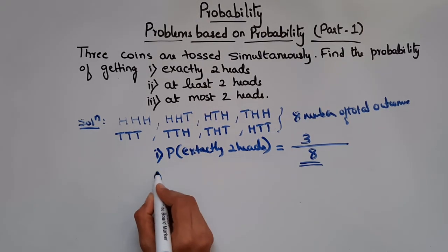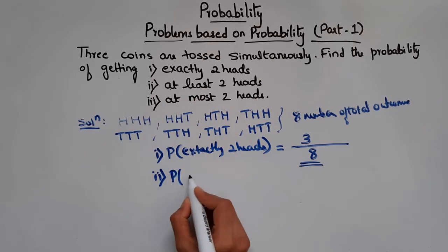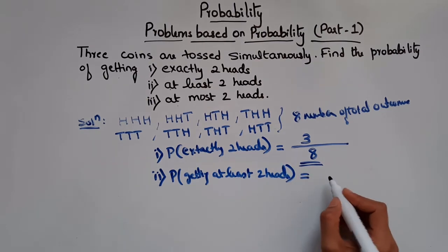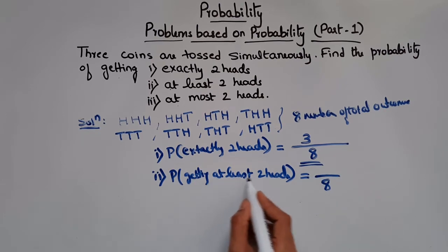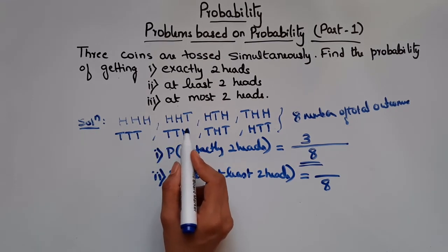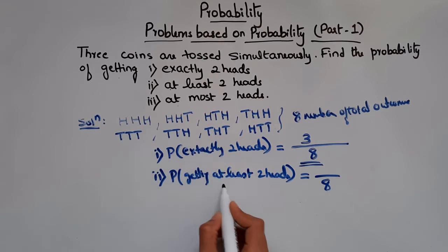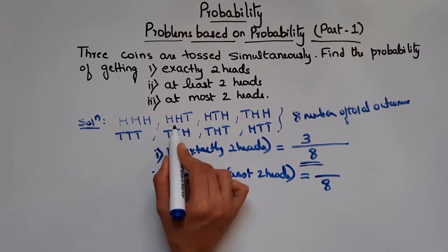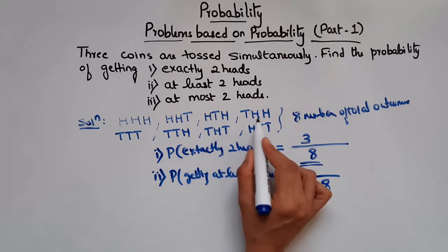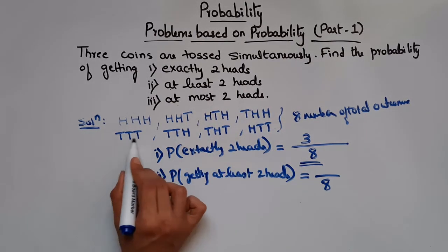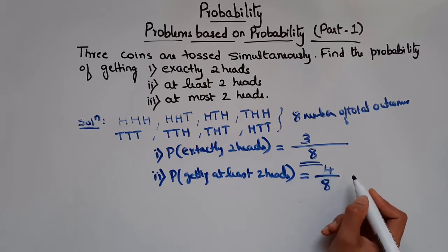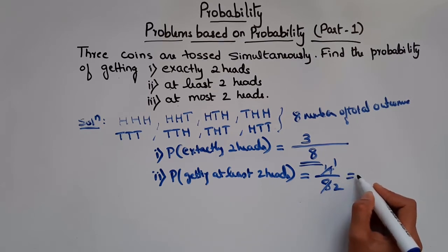Now let us find the probability of getting at least 2 heads. Total number of outcomes is 8. At least 2 heads means 2 or more — it can be 3 heads too. Head head head gives 3 heads: 1 outcome. Head head tail, head tail head, and tail head head each give 2 heads: 3 more outcomes. So 4 outcomes are favorable. Therefore probability of getting at least 2 heads is 4 by 8, which equals 1 by 2.